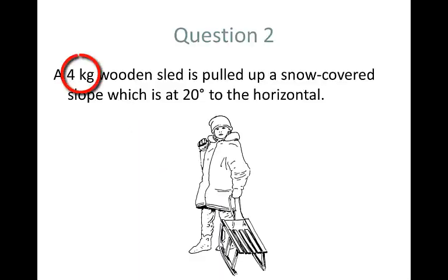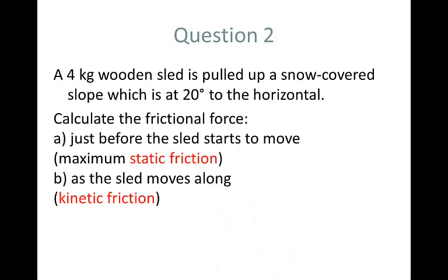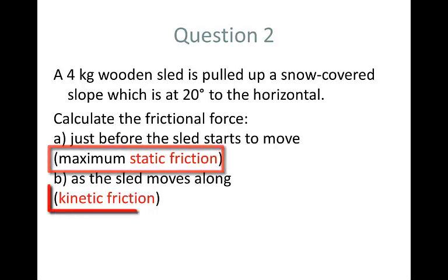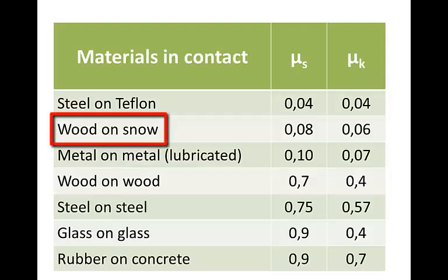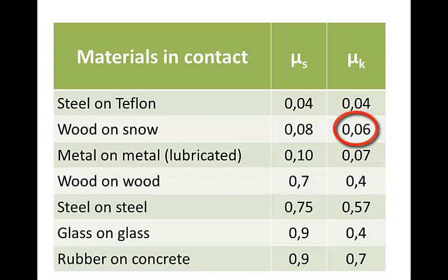Question 2. A 4 kg wooden sled is pulled up a snow covered slope, which is at 20 degrees to the horizontal. Here's a picture of a wooden sled. You climb to the top of a mountain and then you sit on the sled and then you slide all the way down on the snow. We need to calculate the frictional force just before the sled starts to move and as the sled moves. In other words, the maximum static friction and the kinetic friction for the situation. We look on our table of coefficients of friction and we find the wood-snow combination, static friction coefficient 0.08, kinetic friction coefficient 0.06.